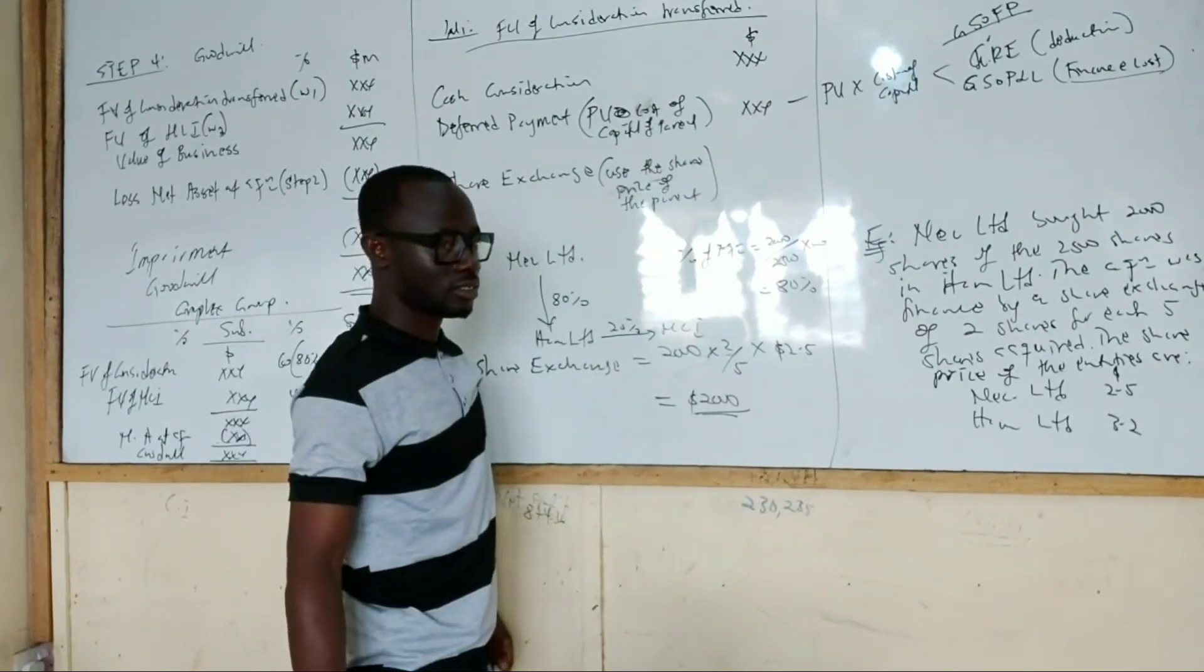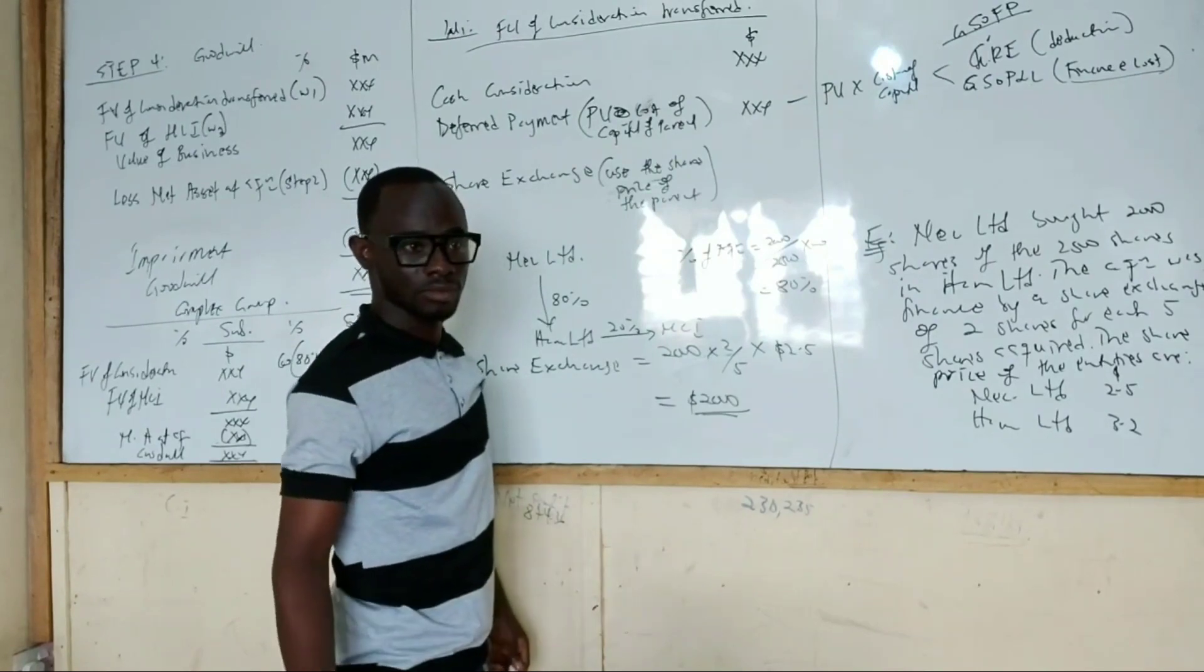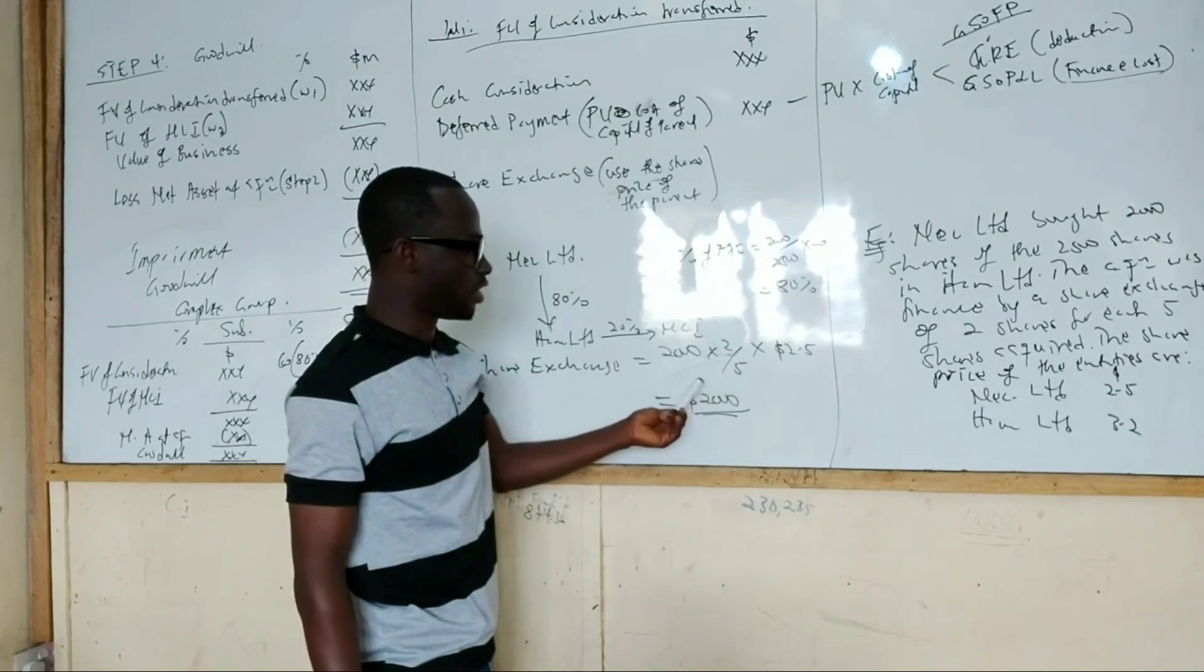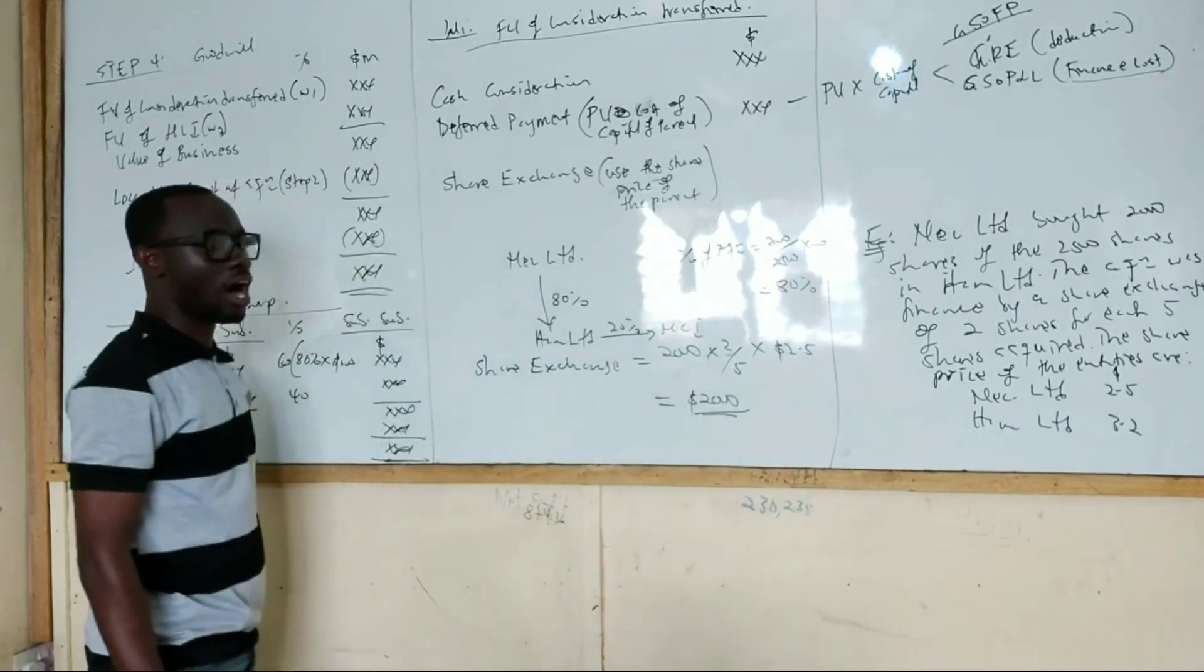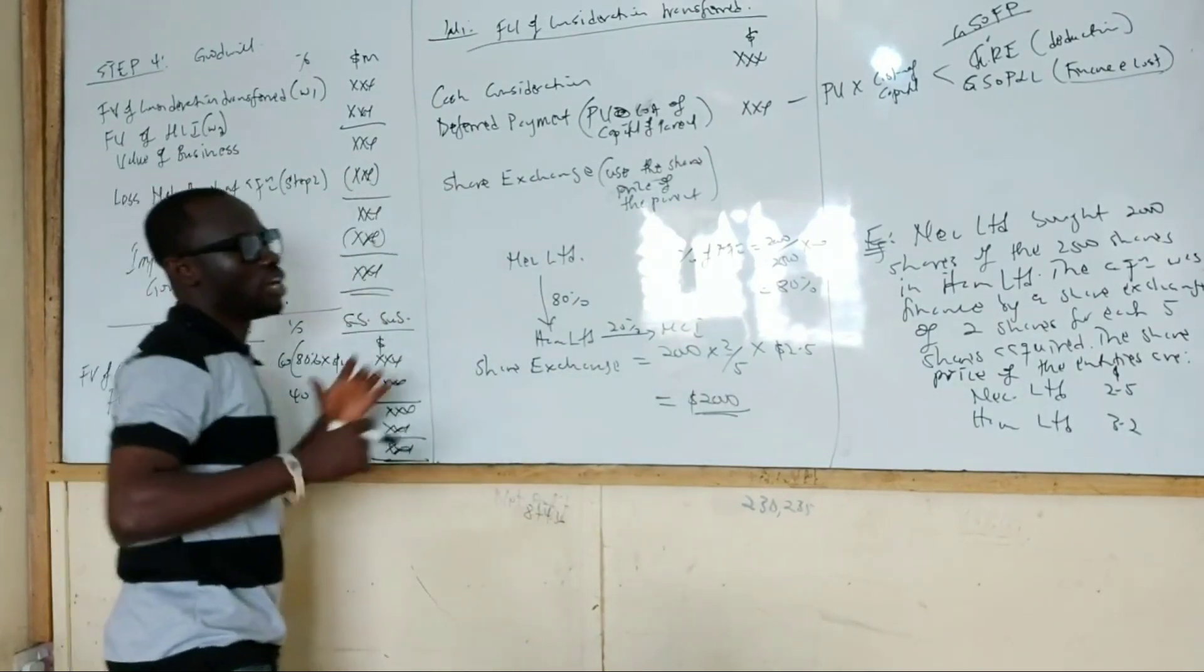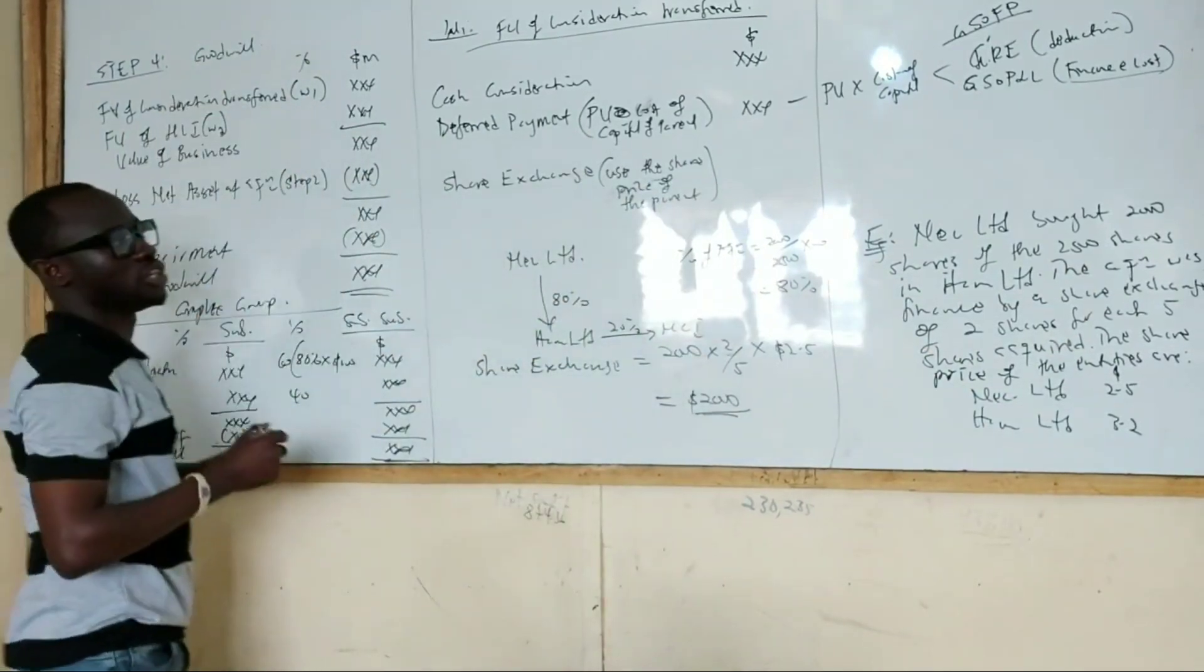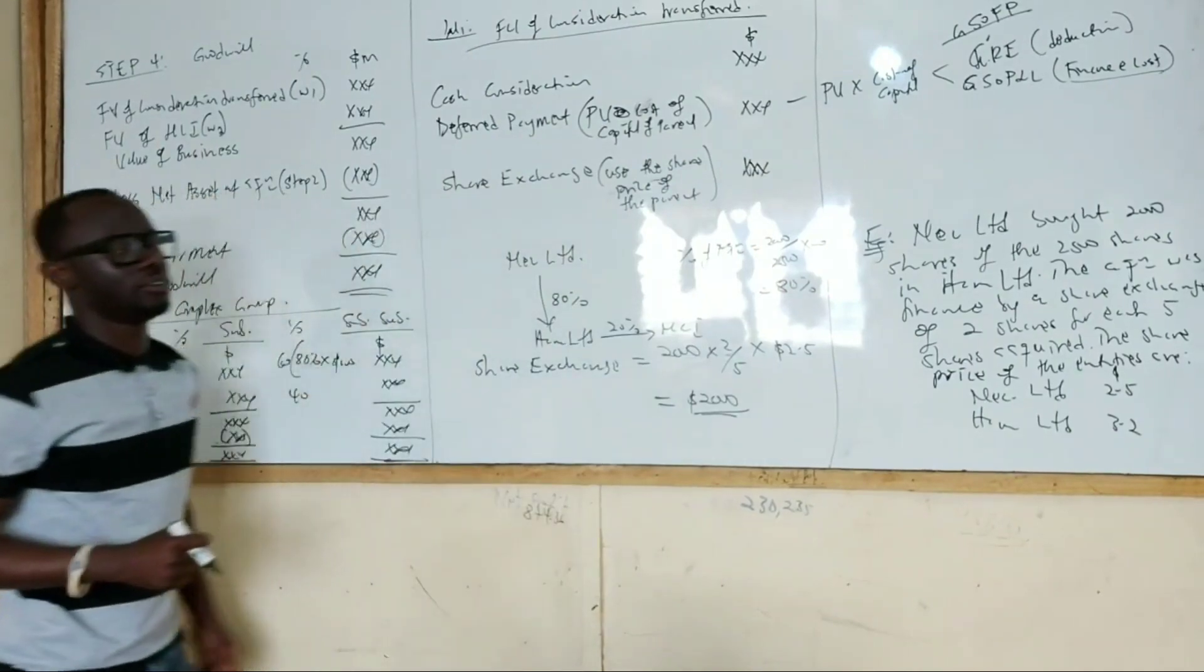It needs to be 4,000. So 2 times 5 is 2,000. 2,000 times 2 is 4,000. Divide by 5, it's 800. 800. So times 2.5, give me this. So if this was the only thing we were giving, then the fair value of consideration would be that. So that is the third component of fair value of consideration.